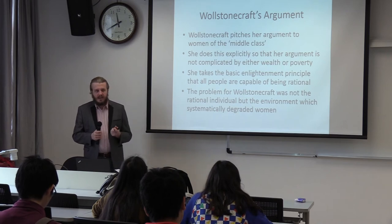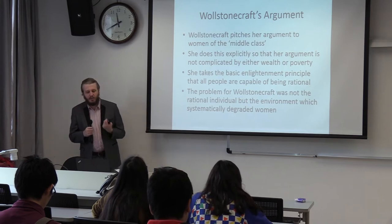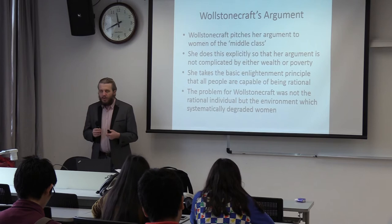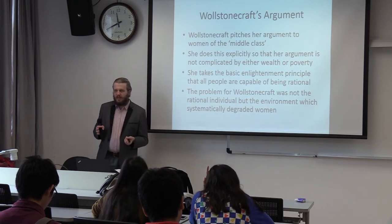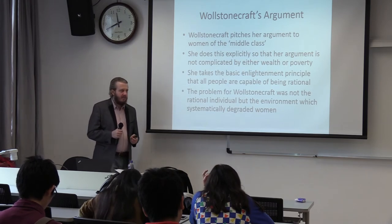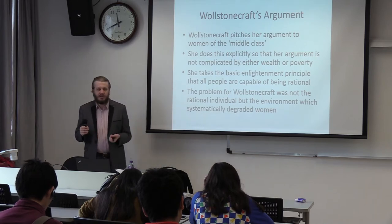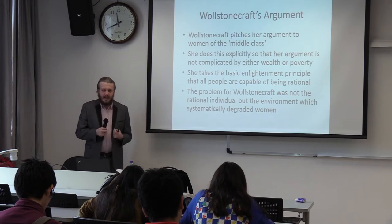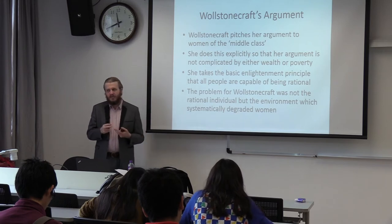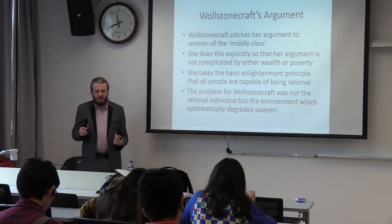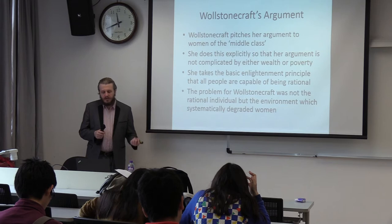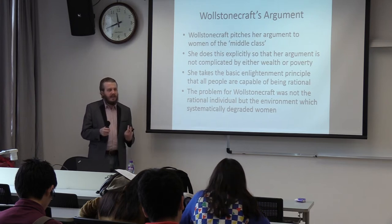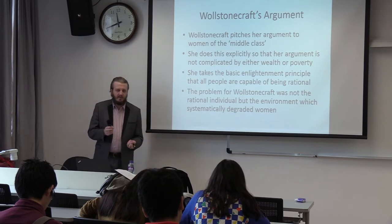Wollstonecraft deliberately avoids discussing wealth or poverty in her argument. She pitches her argument to middle-class women to avoid complications involved with wealth or poverty. People with resources can avoid certain social problems — if you're like Hillary Clinton, you probably don't get discriminated against much because you have economic resources to punish people who do. If you're poor, the argument is that the problem may be more a result of poverty than gender. So Wollstonecraft focuses specifically on problems caused by gender, particularly socially expected concepts of gender.